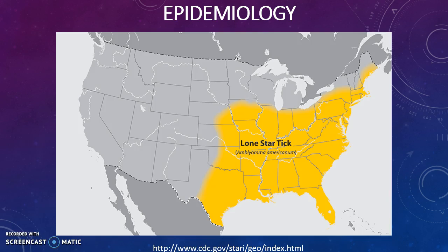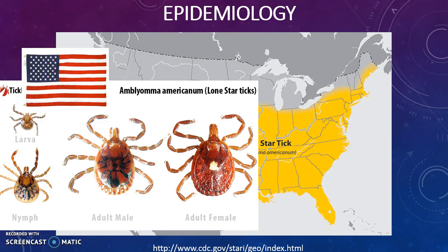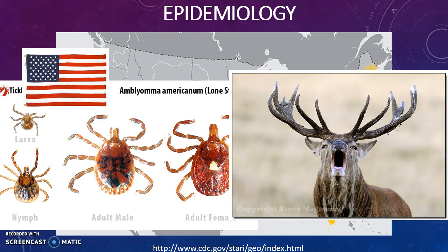Ehrlichia, on the other hand, is transmitted by Amblyomma americanum, which is also known as the Lone Star Tick, where its reservoir is deer.